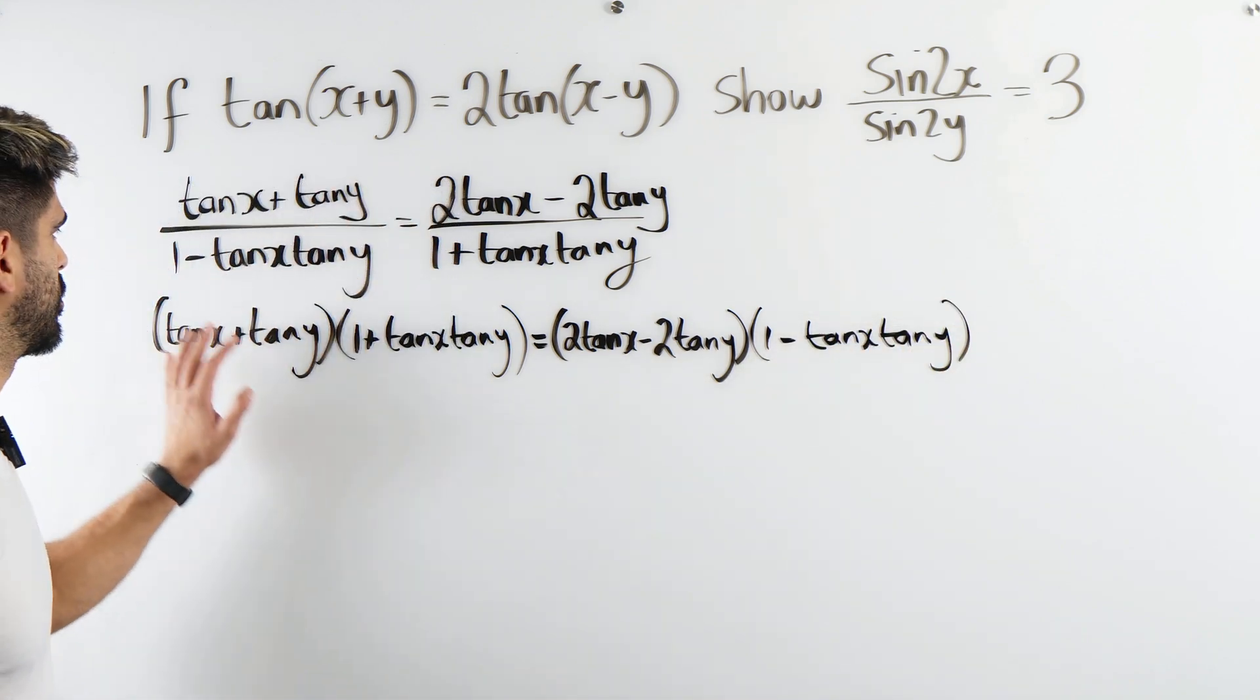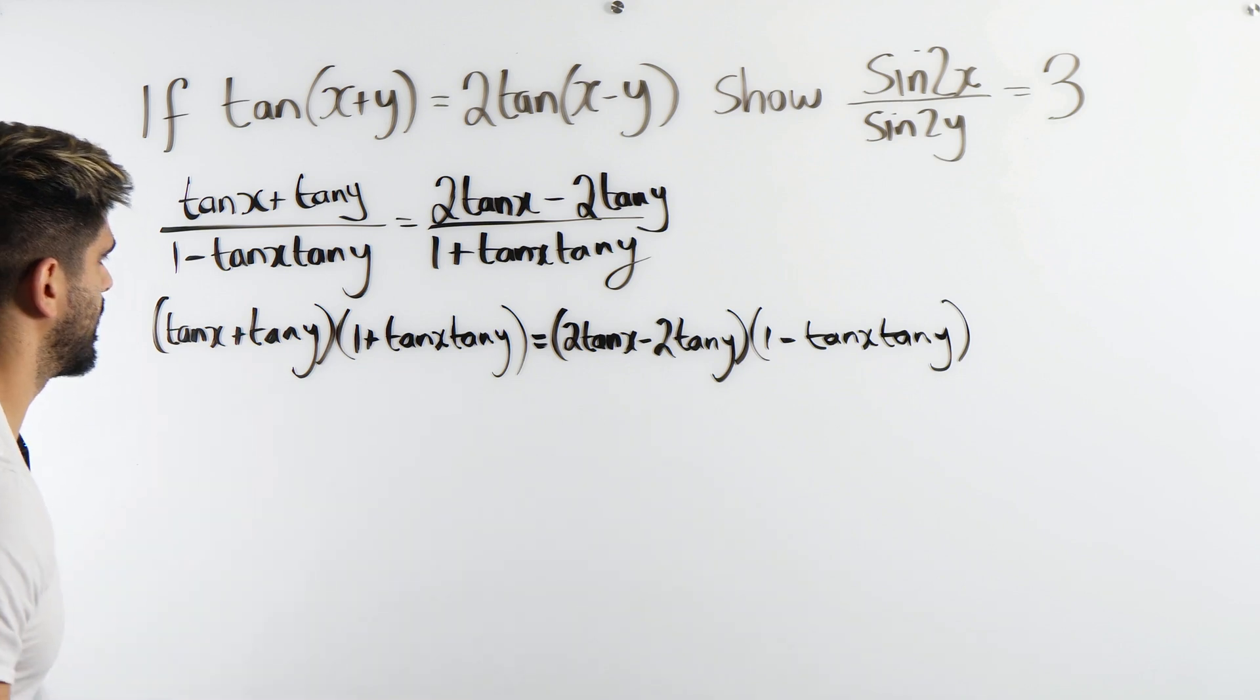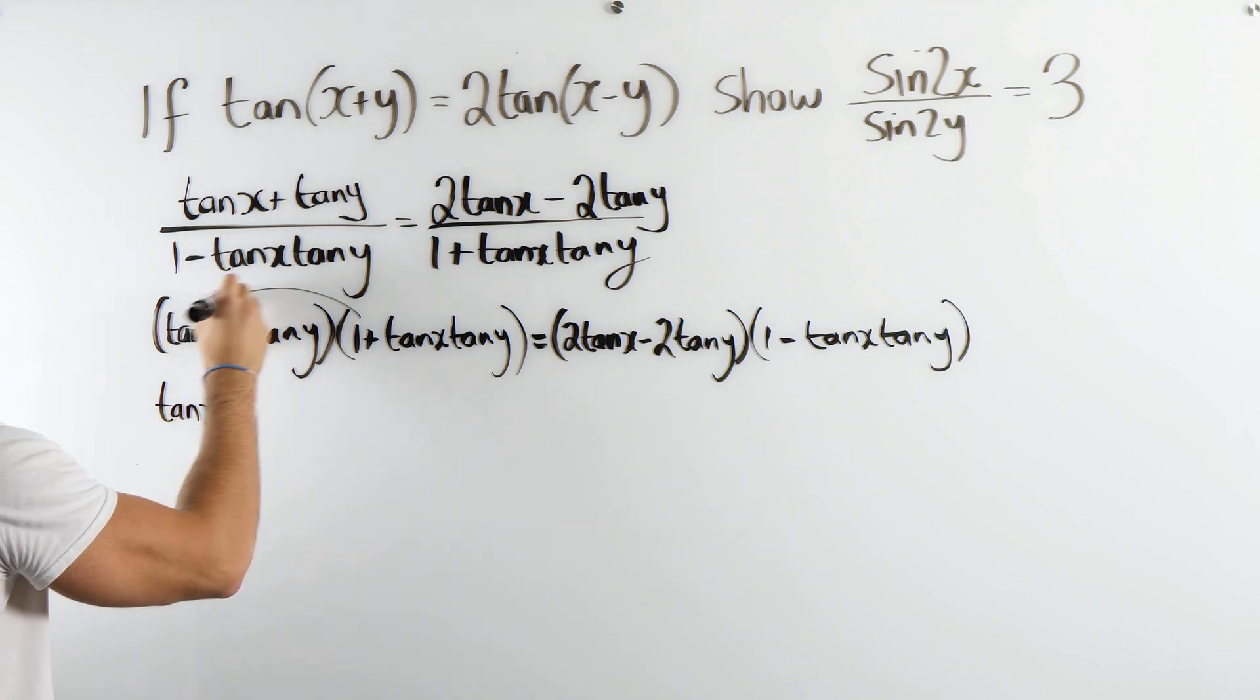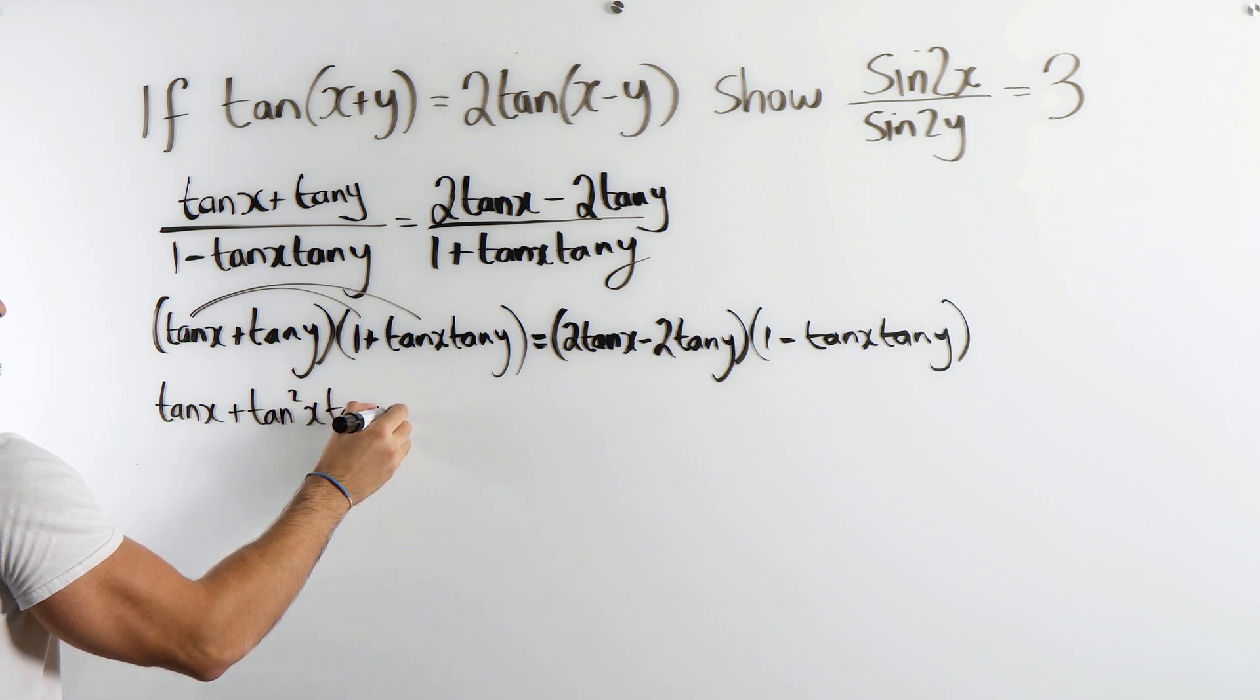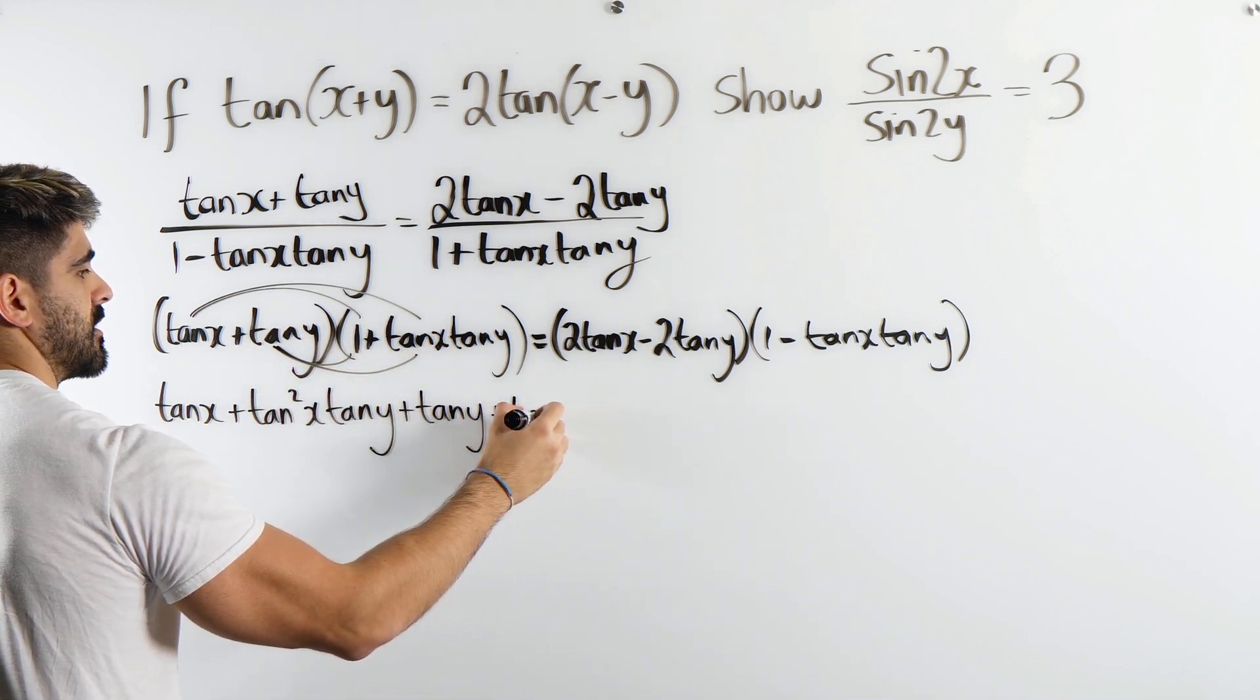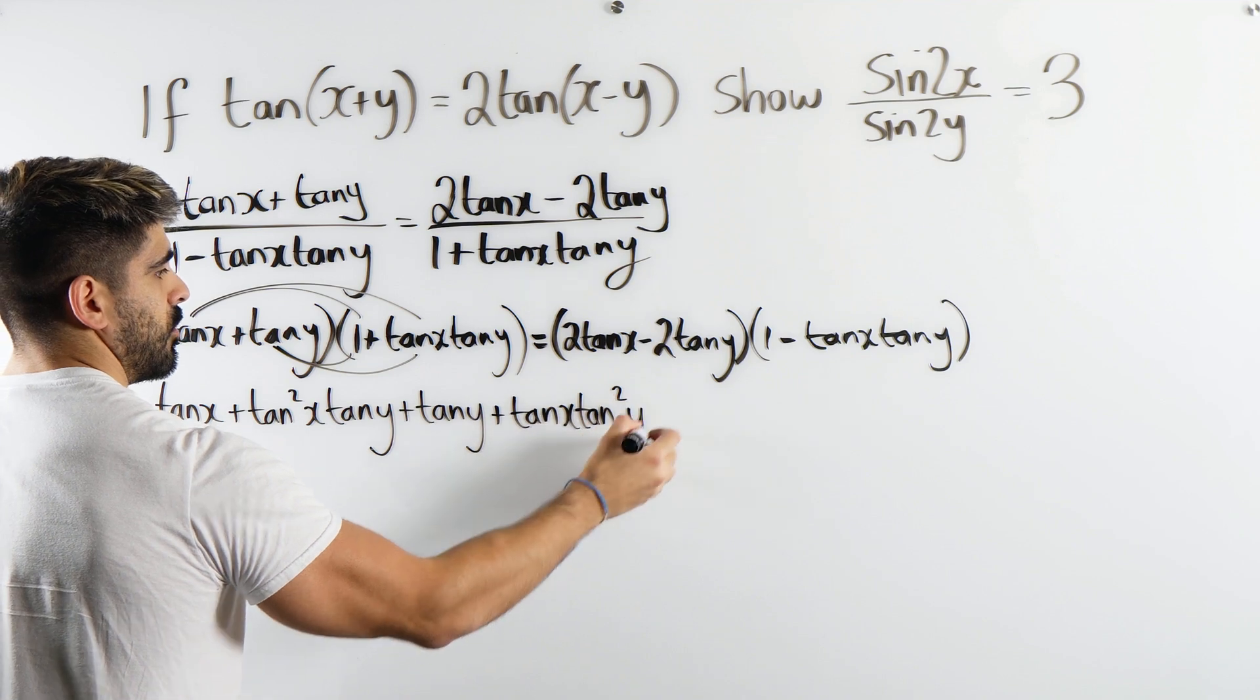Okay, always double check your working, just make sure everything's good. Alright, so let's expand this. We're going to get tan x times 1 is just tan x. Then we have tan x times this, that's going to give me tan squared x tan y. Here we get tan y, and tan x tan squared y.